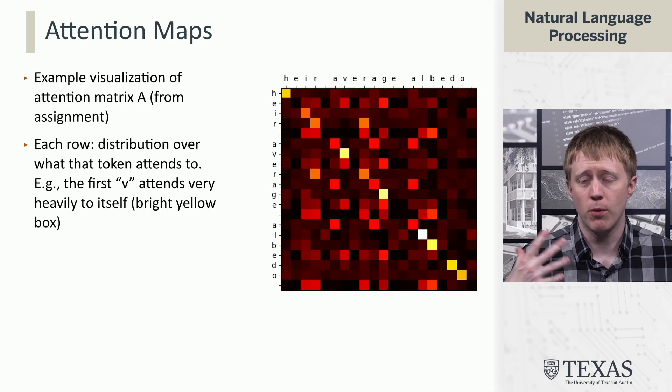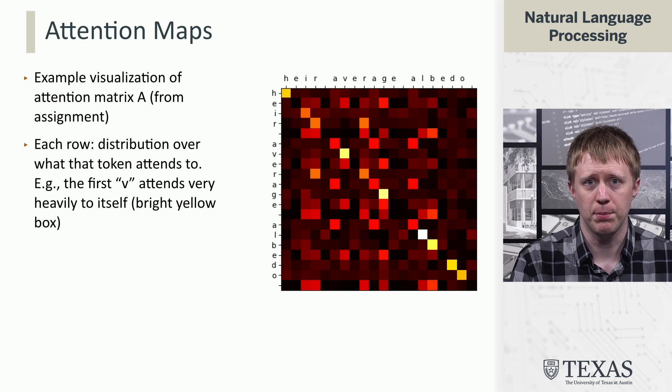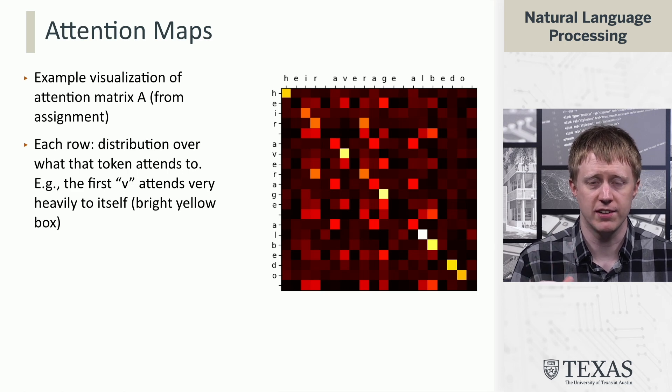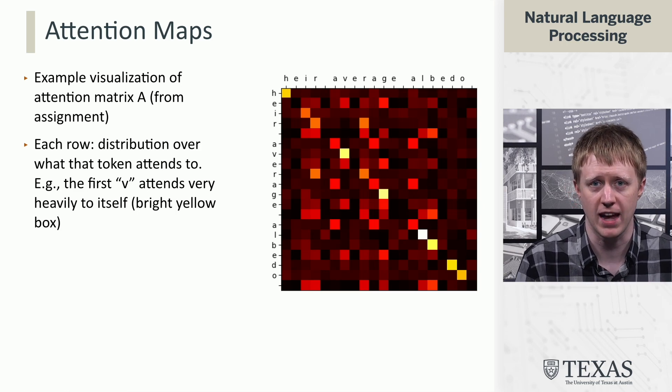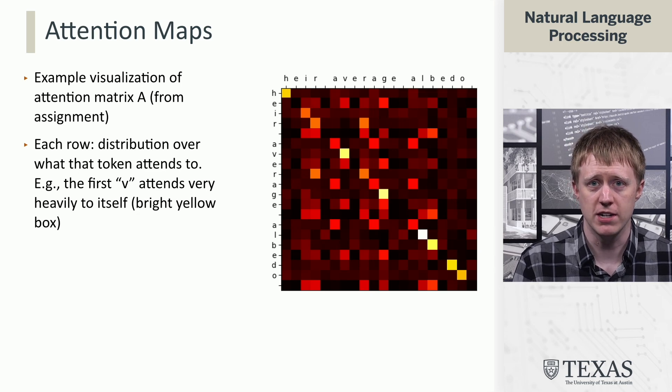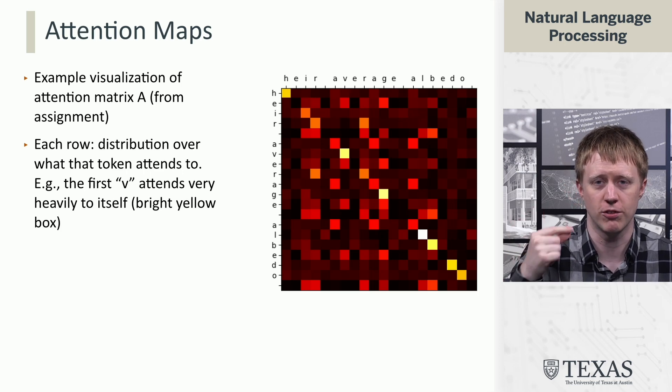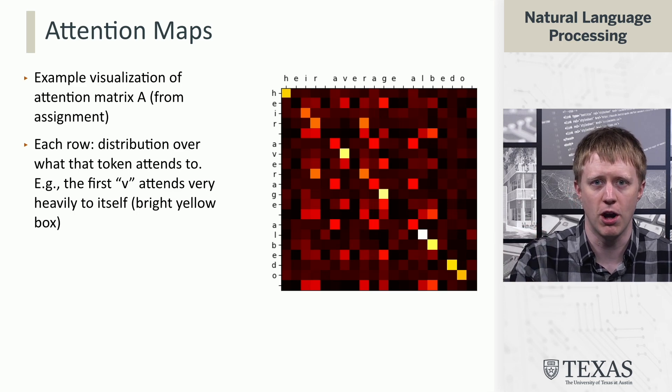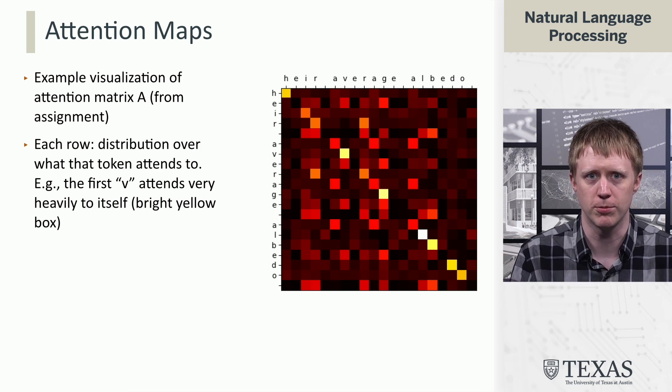Just to show one more representation of this attention computation, this is an example of a character level classification task, and we've visualized the attention matrix that's in one part of a transformer for this task. What we see is that we have a square matrix where each cell is a probability, and these probability distributions sum to one over the rows. Higher or brighter colors are higher values. When there's a white cell in the row, the rest of the row is very faint. But you can have a number of red cells if the distribution is more uniform.